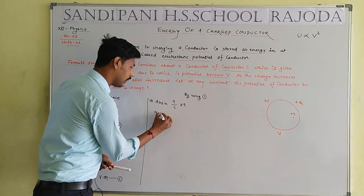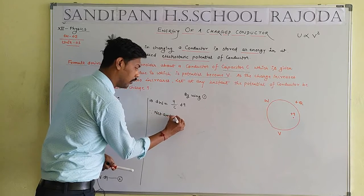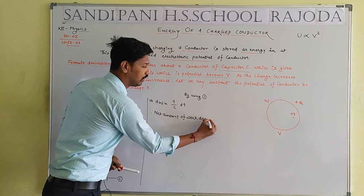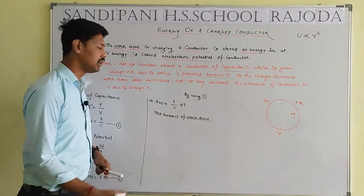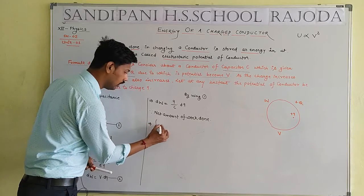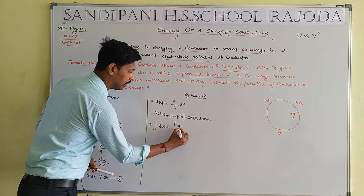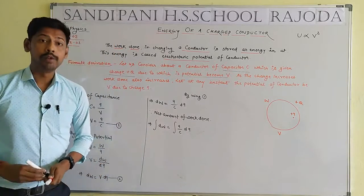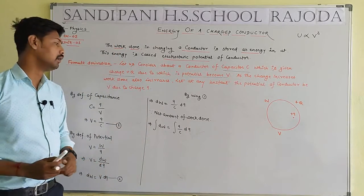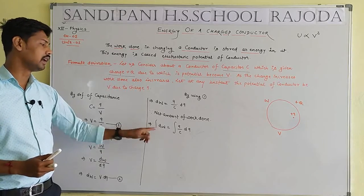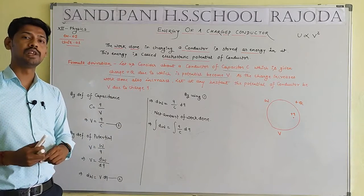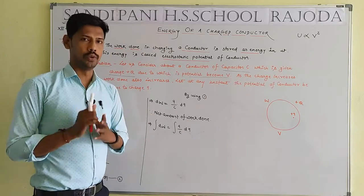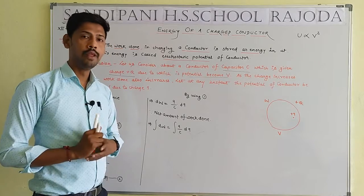For the total or net amount of work done in physics, we take the integration on both sides. When taking integration, we also consider limits. Integration of dW gives a limit in the form of W; integration of dQ gives a limit in the form of Q.